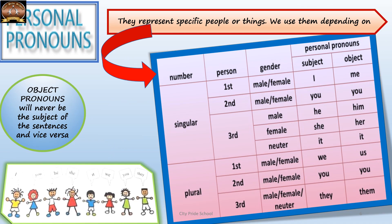The first type are personal pronouns, which are used to represent specific people or things. Their usage depends on different criteria. First is number — there are separate pronouns to replace singular and plural nouns. Singular personal pronouns are: I, me, you, he, him, she, her, and it.